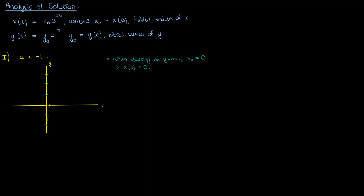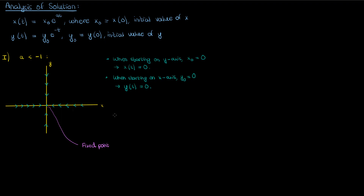So trajectories on the y-axis all converge to the origin and look like this. But what about trajectories on the x-axis? Well, same idea. If we start on the x-axis, y₀ is zero which means y(t) is zero. Because a is negative, as time goes on x eventually also approaches zero. So our trajectories on the x-axis don't deviate vertically but all end up converging to the fixed point at the origin.